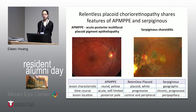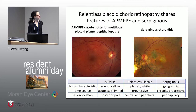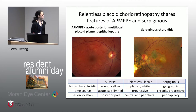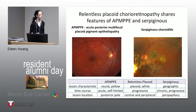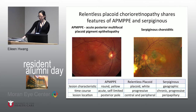AMPI — acute posterior multifocal placoid pigment epitheliopathy — shows yellow placoid lesions that are not very well defined. Serpiginous choroiditis shows geographic lesions extending from the nerve. The ways that relentless placoid differs from these diseases is that it has peripheral lesions early on, whereas AMPI almost never has peripheral lesions, and serpiginous usually only involves the periphery after there's extensive macular involvement.